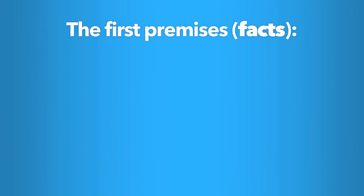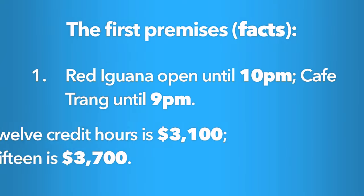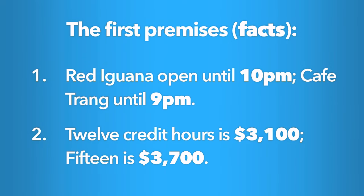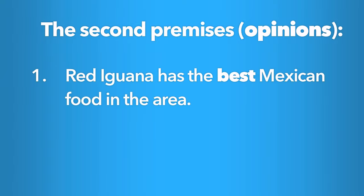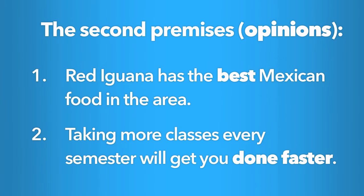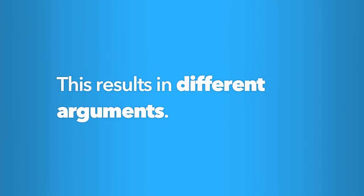In both examples, the first premise offered was a fact that can be proven to be true or false — you can look up the hours for each restaurant or the tuition cost for different numbers of credit hours. However, the second premise offered was an opinion that cannot be proven to be true or false. People may disagree on whether the Red Iguana has the best Mexican food, or if it's the best idea to take a lot of classes to finish your degree more quickly.